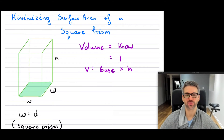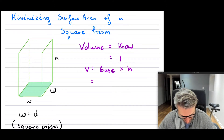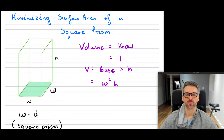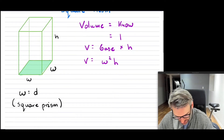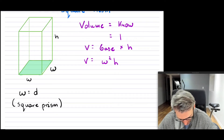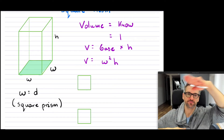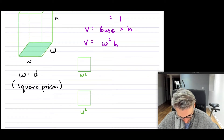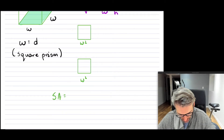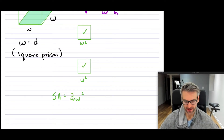For our square-based prism, the base is width times width — or width times depth, but they're equal — so that's w squared, and then our height is h. So the volume equation is w²h, and we know this equals one. For the surface area, we have the base and the top, each with area w², so together that's 2w².